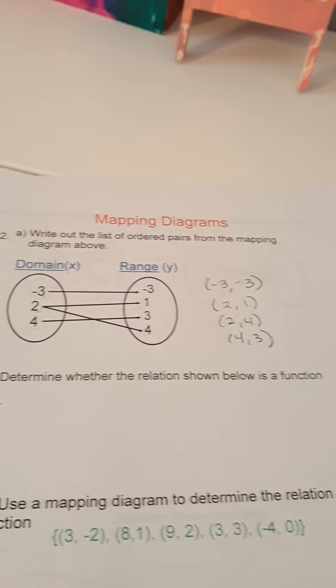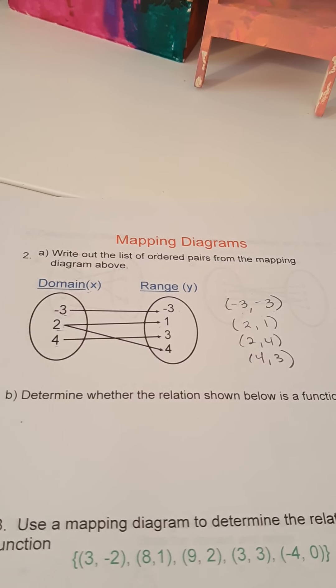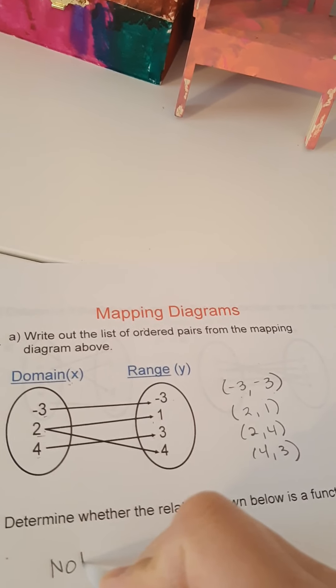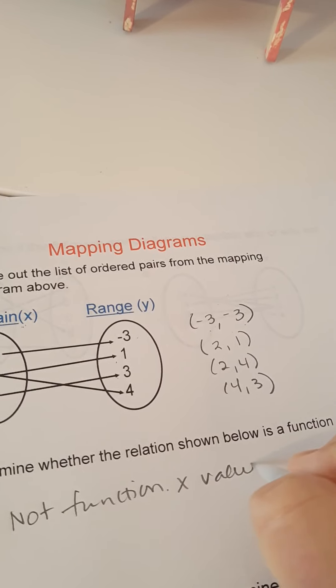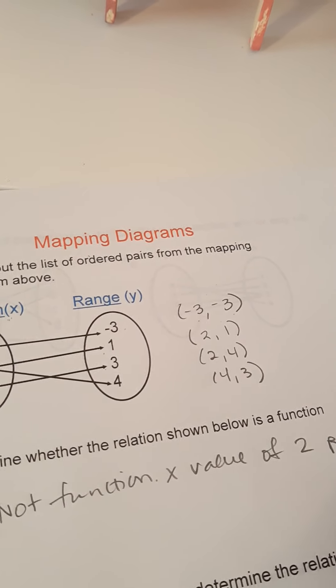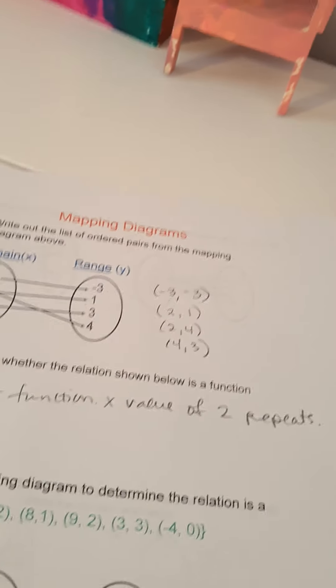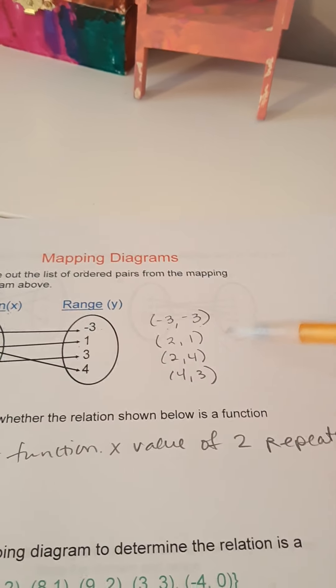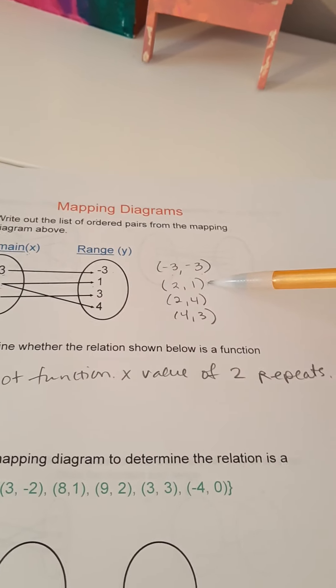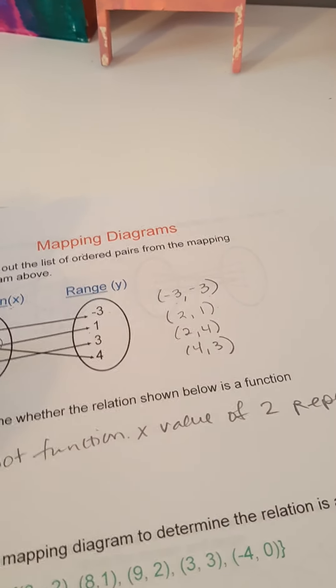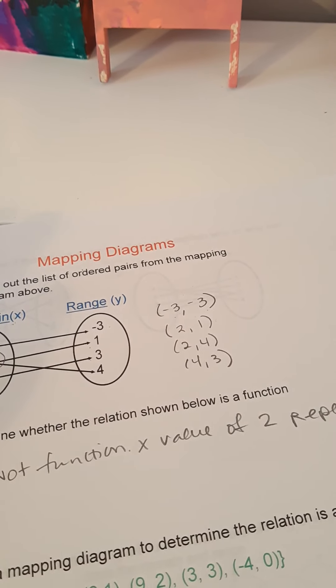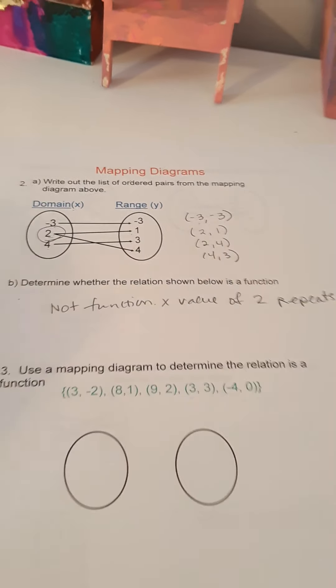So now, determine whether the relation is a function. It is not because the x value of 2 repeats. So, if you're the type of student who doesn't want to have to visualize or actually make ordered pairs, then if the number on the left has 2 or more arrows coming from it, because it is possible to have more than 2 arrows come from one of the domain values, it's not a function.